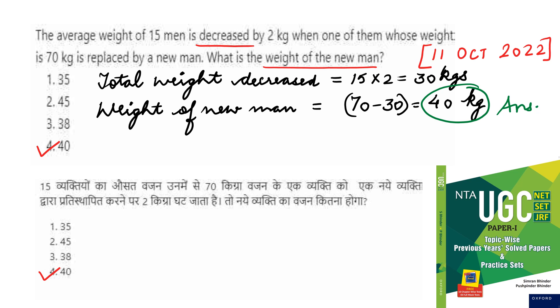Weight of new man, in this case, is equal to 70 minus 30. Because the weight of new man is only 40 kg. Only then the total weight is reducing by 30 kg. Because the person he is replacing, that person's weight was 70 kg. I hope you have understood this. This type of questions are being asked in UGC net exam. You must prepare these questions.